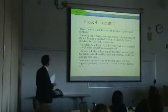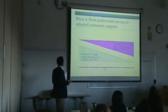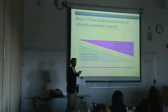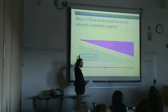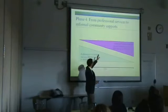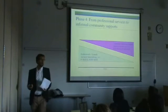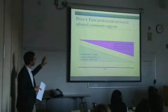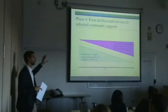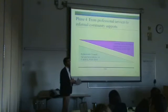A key big-picture point about the transition phase: transitioning in wraparound really takes place over the entire process, whereby you're trying to, over time, reduce the reliance on professionals and on covered or reimbursable formal services, and move more toward informal supports. We recognize that at the point of transition there may still be several formal treatments that are necessary, but the idea is that over time you're reducing relative reliance on formal supports and leaning more on the informal natural supports that families can rely upon.